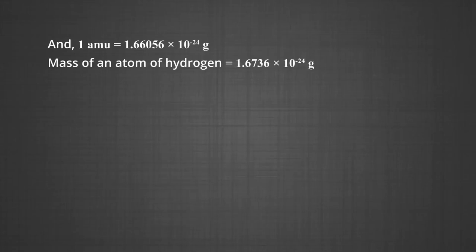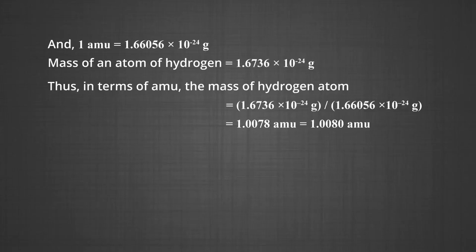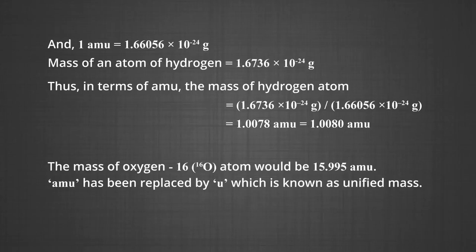The mass of an atom of hydrogen is 1.6736 × 10⁻²⁴ grams. Thus, in terms of AMU, the mass of the hydrogen atom is 1.6736 × 10⁻²⁴ g divided by 1.66056 × 10⁻²⁴ g, which equals 1.0078 AMU. Similarly, the mass of the oxygen O-16 atom would be 15.995 AMU.